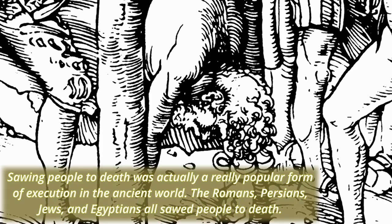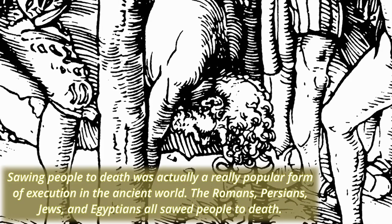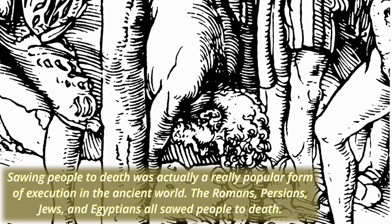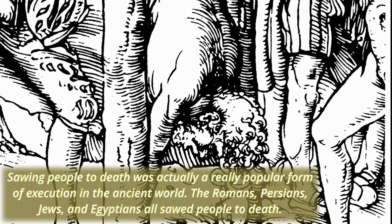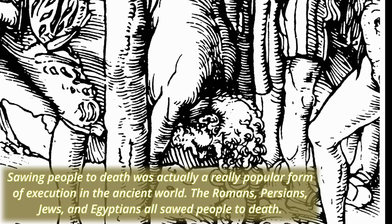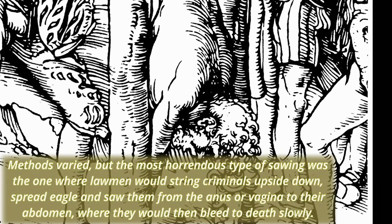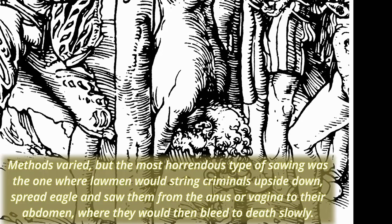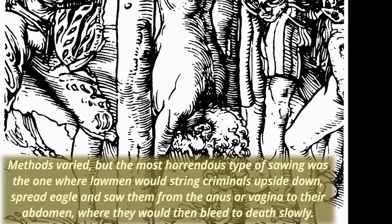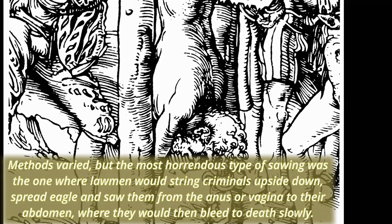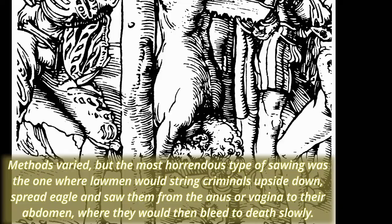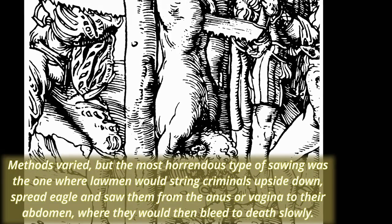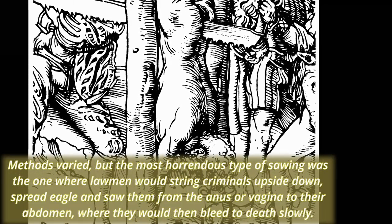Sawing people to death was actually a really popular form of execution in the ancient world. The Romans, Persians, Jews, and Egyptians all sawed people to death. Methods varied, but the most horrendous type involved lawmen stringing criminals upside down, spread-eagle, and sawing them from the anus or vagina to their abdomen, where they would then bleed to death slowly.